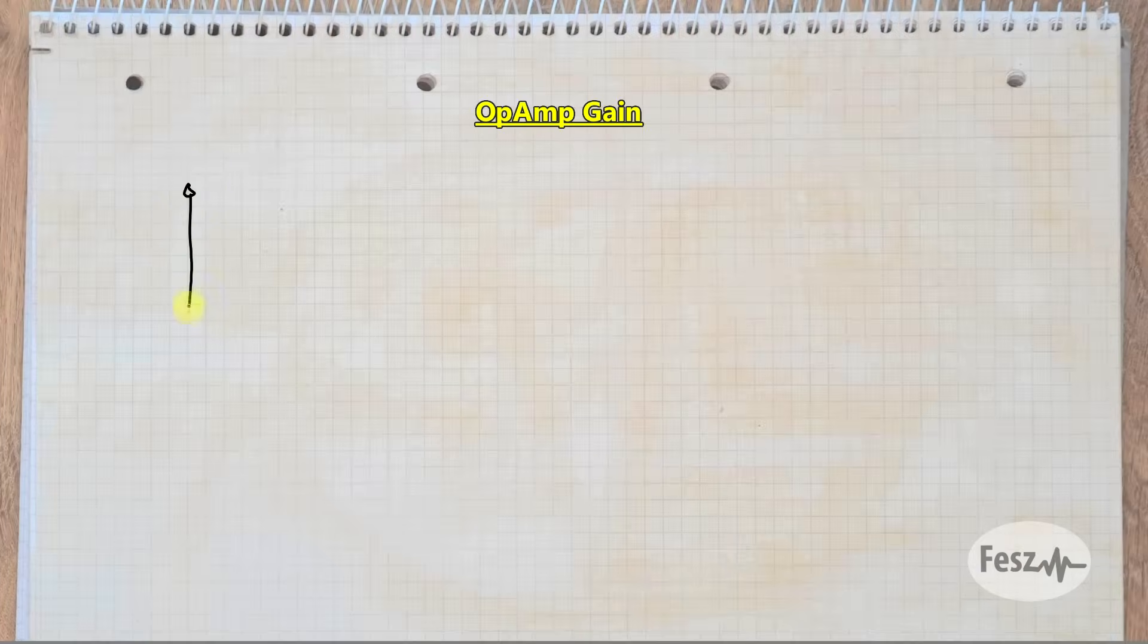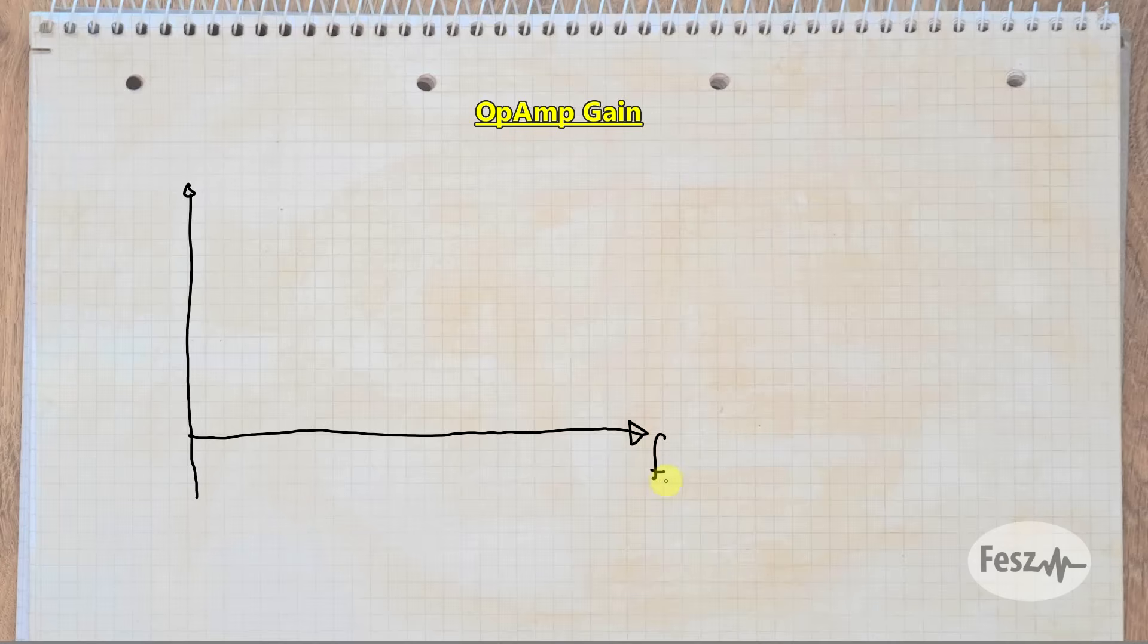If we start with the small signal open loop gain of a typical op-amp, it's a graph where on the x-axis we have frequency, usually a logarithmic scale, and the y-axis is voltage gain, expressed in decibels. There are three main parameters that the datasheet will contain that help us create this graph, if it's not already there.